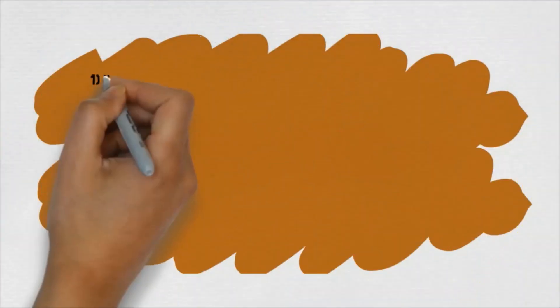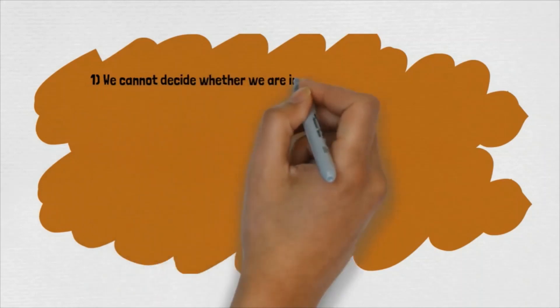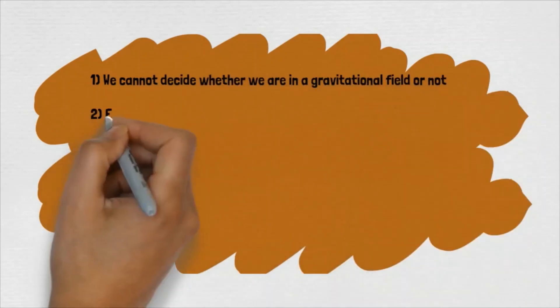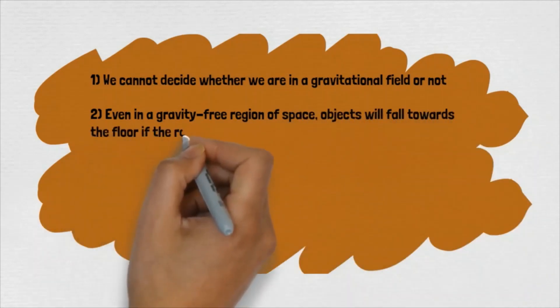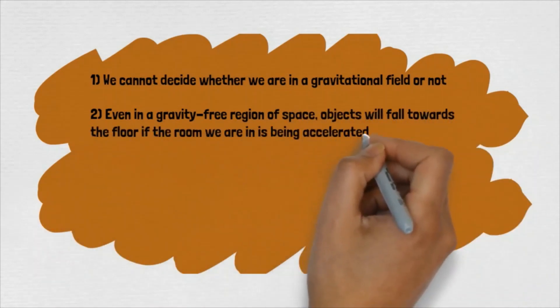If you closely look into these three situations, you can say that first, we cannot decide whether we are in a gravitational field or not. Second, even in a gravity-free region of space, objects will fall towards the floor if the room we are in is being accelerated.